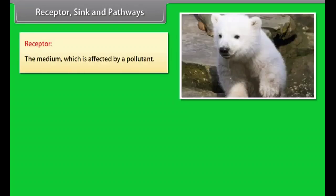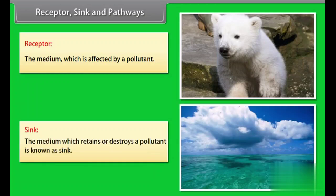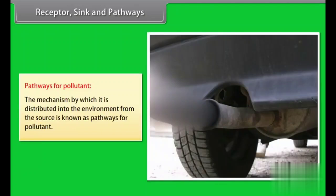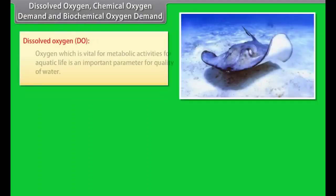Receptor, sink, and pathways. Receptor: The medium which is affected by a pollutant, for example, living bodies, human bodies, etc. Sink: The medium which retains or destroys a pollutant, for example, oceans are the sink for atmospheric carbon dioxide. Pathways for pollutant: The mechanism by which it is distributed into the environment from the source, for example, emission of gases from automobiles.